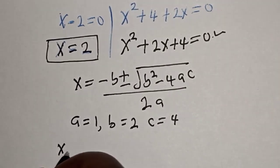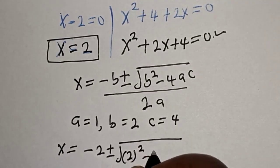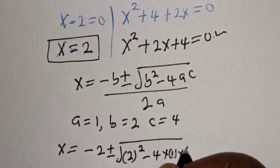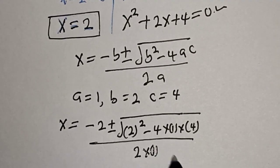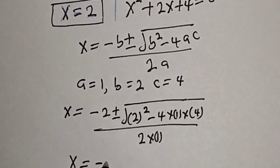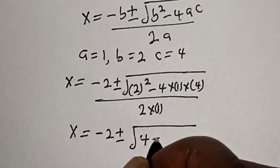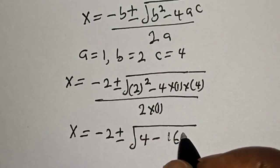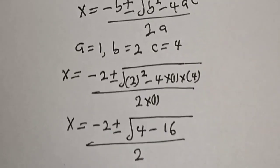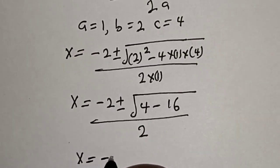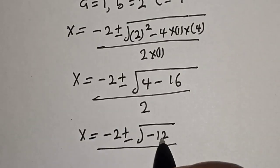Now we have s is equal to minus 2 plus or minus square root of 2 squared minus 4 multiplied by 1 multiplied by 4, divided by 2 multiplied by 1. Simplifying: s is equal to minus 2 plus or minus square root of 4 minus 16, divided by 2.